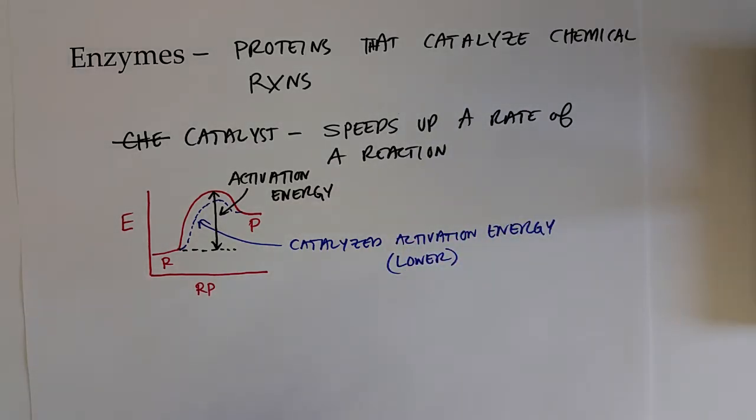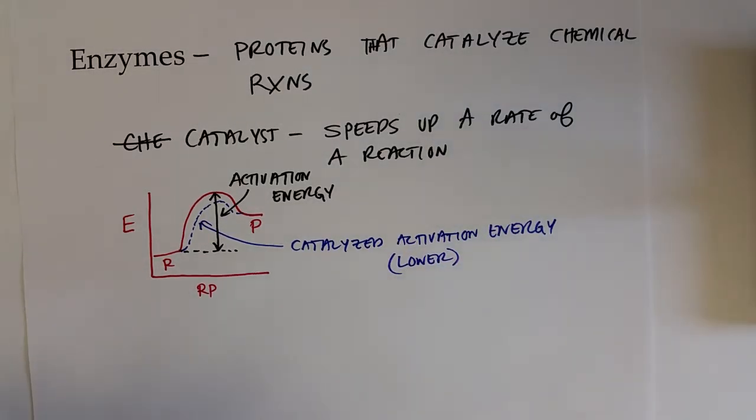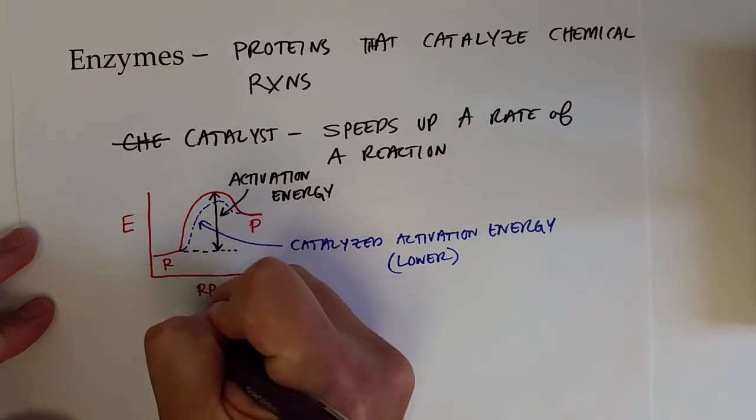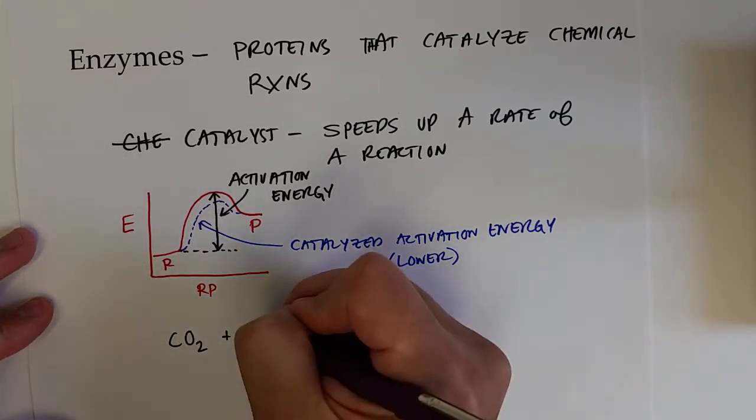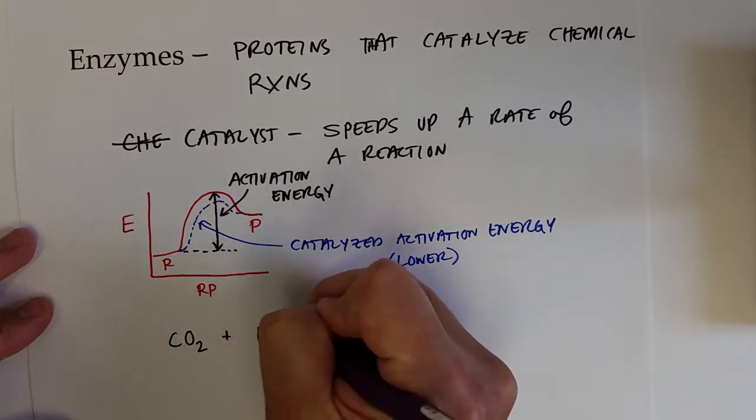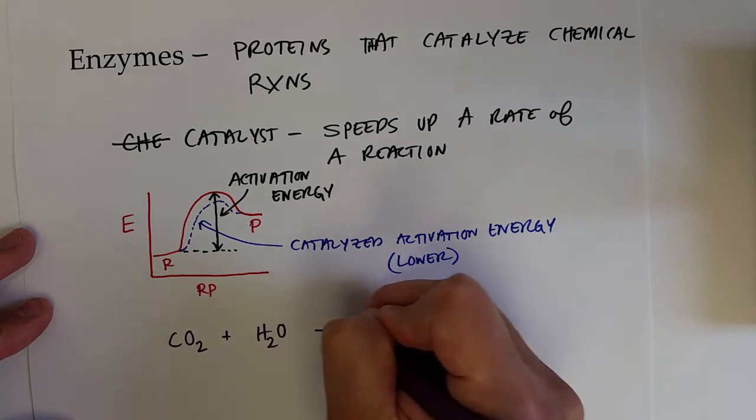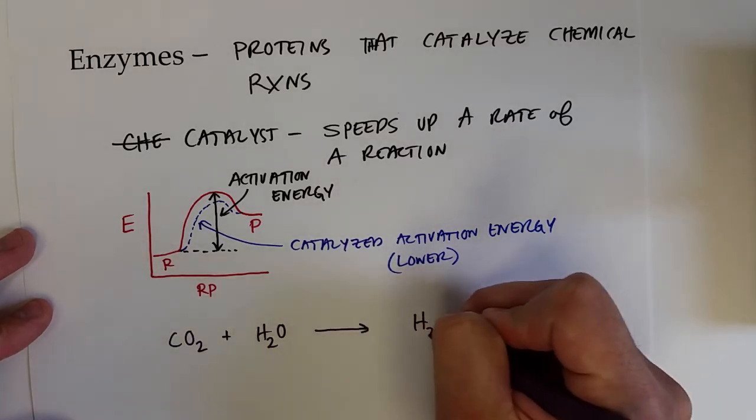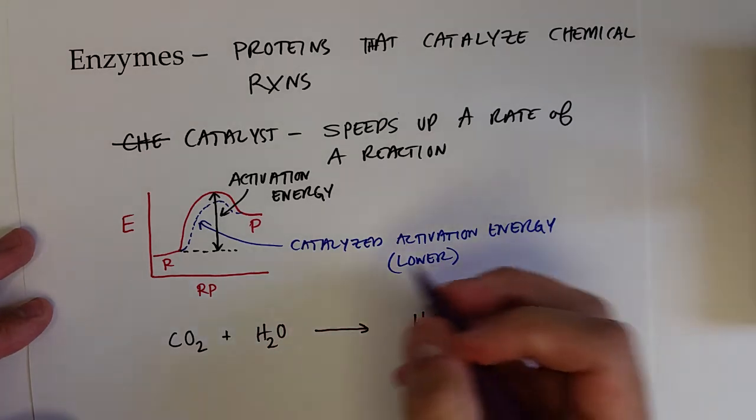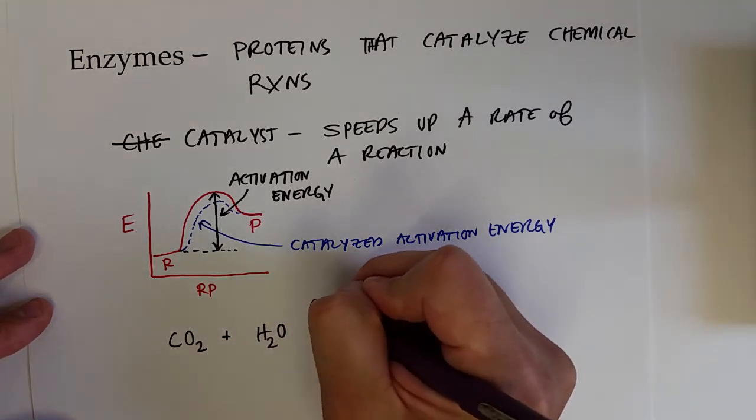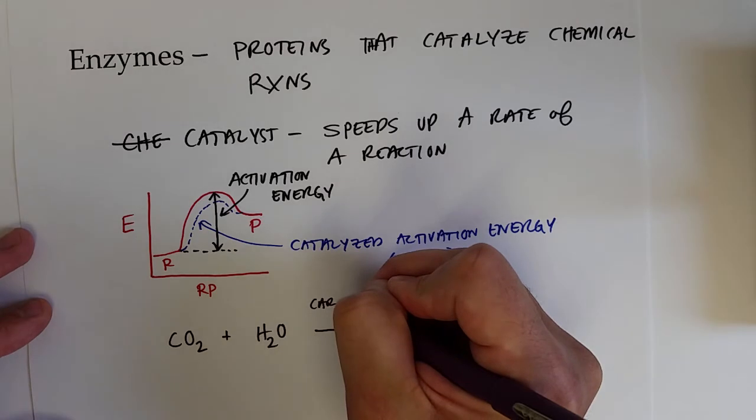Your body has a lot of enzymes, and they're usually named for what they do. All living substances have enzymes, such as the enzyme that converts carbon dioxide and water into carbonic acid H2CO3. The enzyme that does this is called carbonic anhydrase.